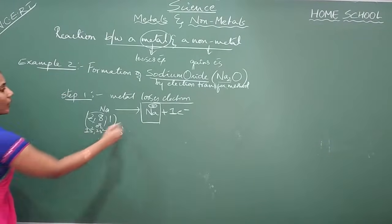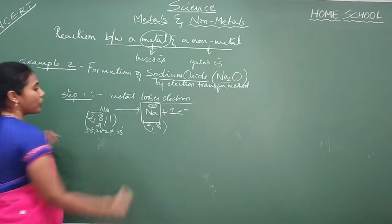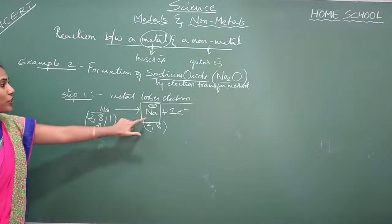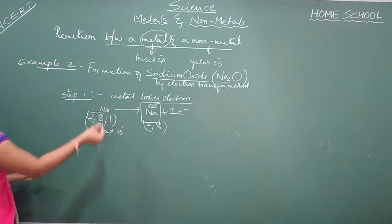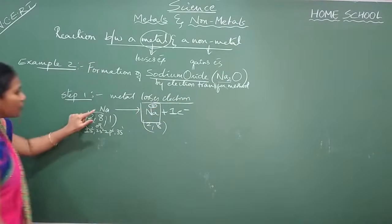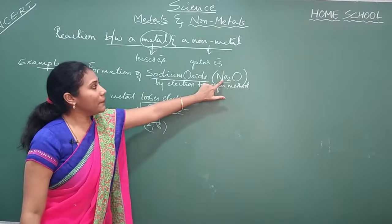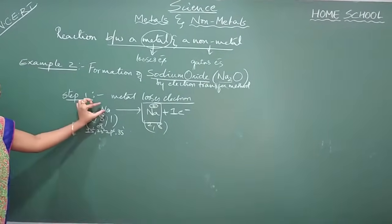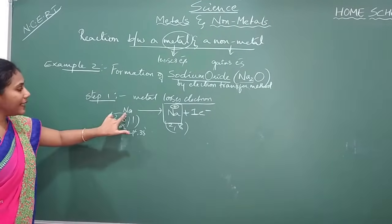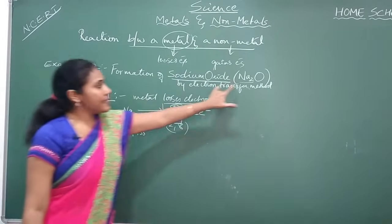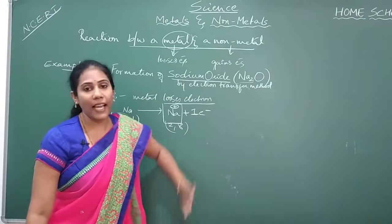In step number 2, what is the electronic configuration of Na⁺? It is 2, 8 — it has lost that 1 electron. After losing, you have got Na⁺ with configuration 2, 8. And don't multiply here because you have 2 sodiums — you are showing 2 Na⁺. Whatever may be the number of sodiums in a formula, just do the losing of electron with one atom. Take it as one sodium only, since the 2 is dealt with in the last step.